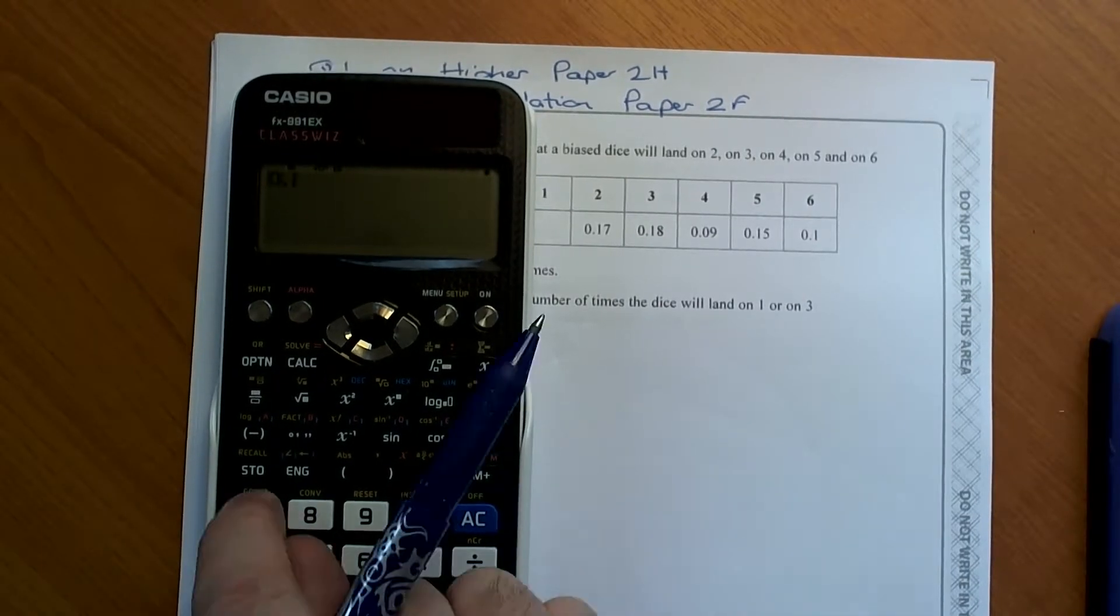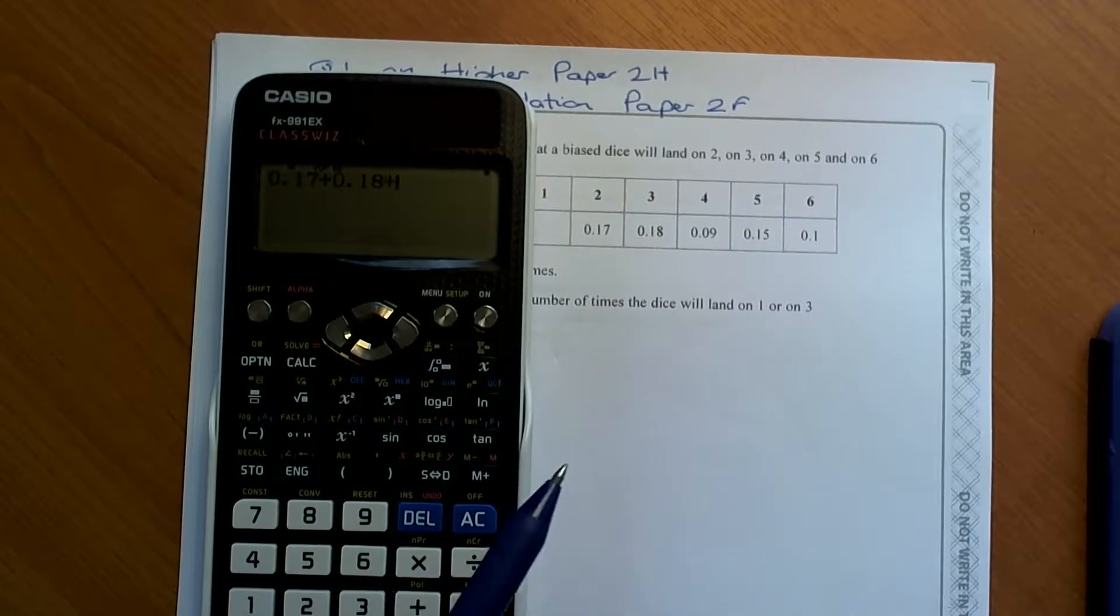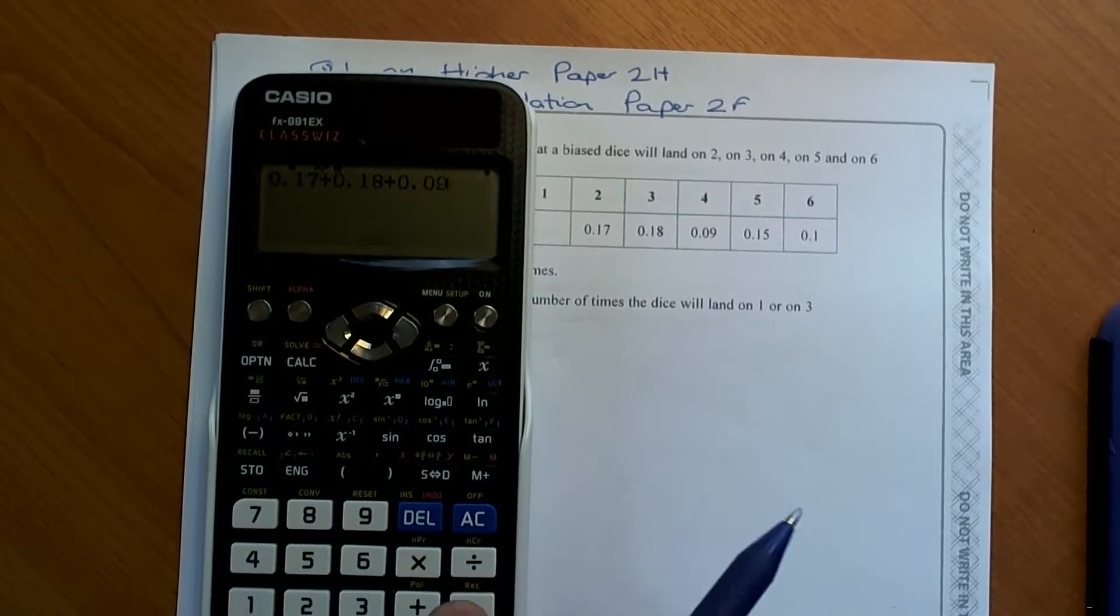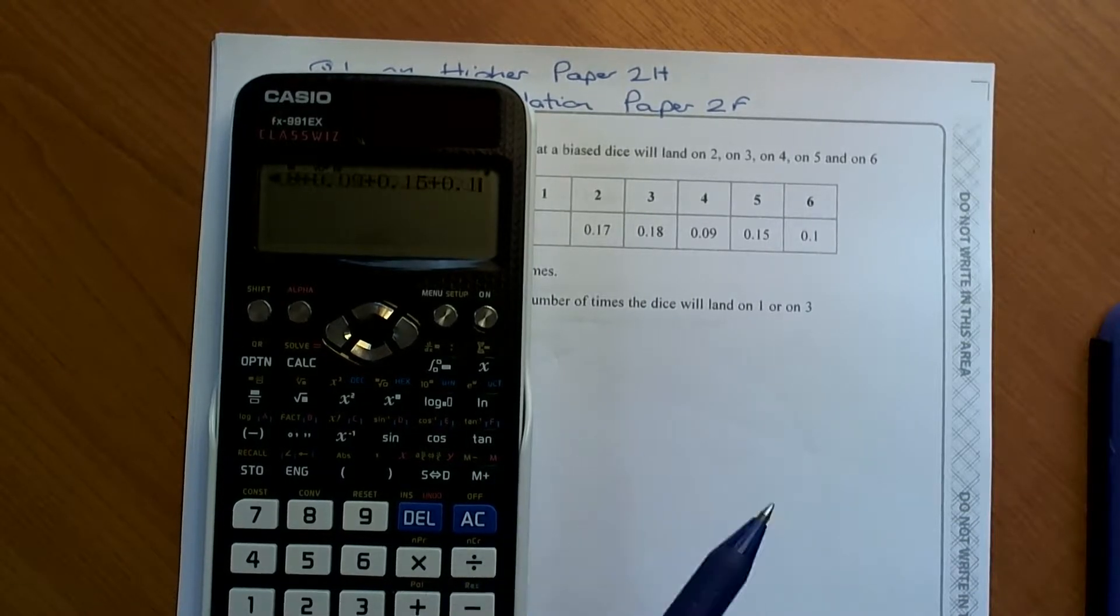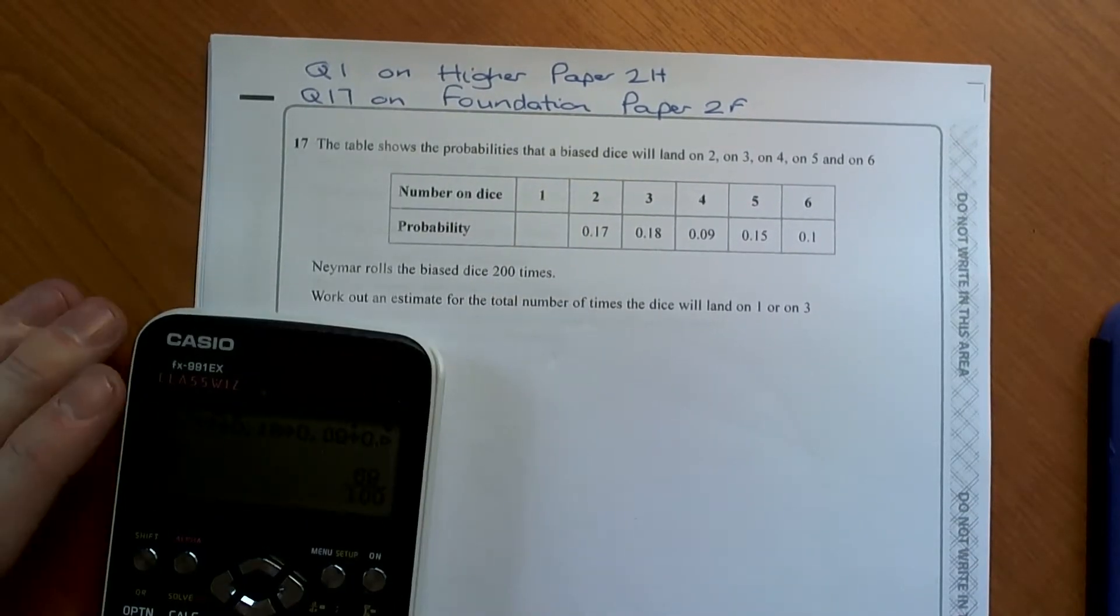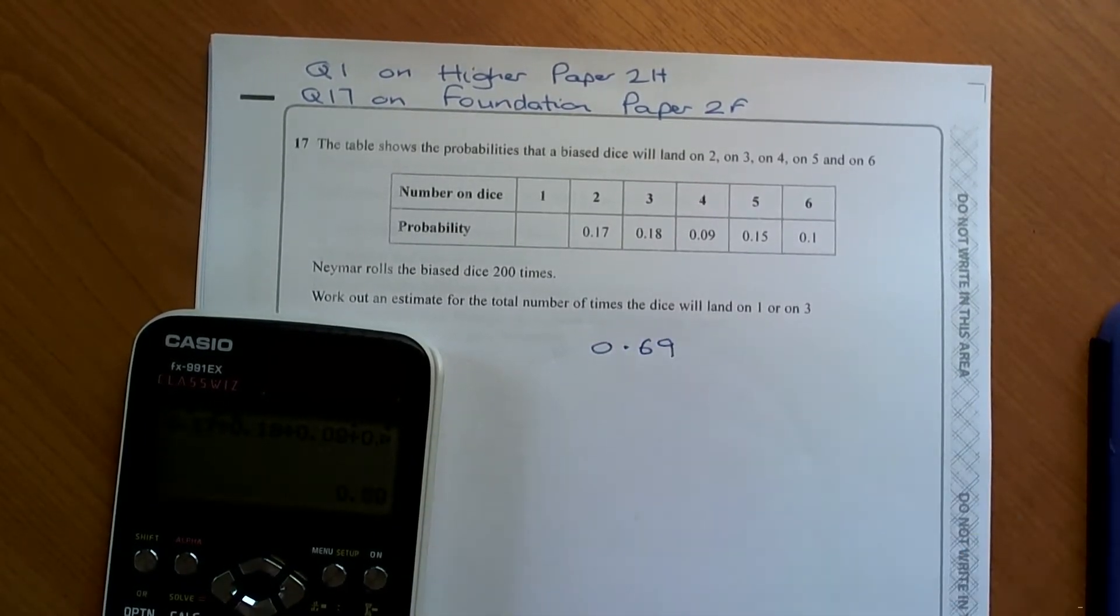So 0.17 plus 0.18 plus 0.09 plus 0.15 plus 0.1 equals. They total up when I press the SD button, they add up to 0.69.